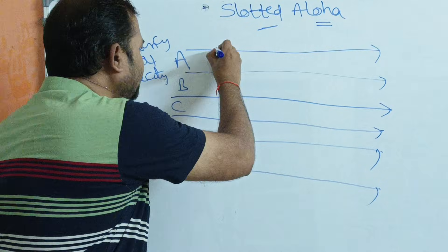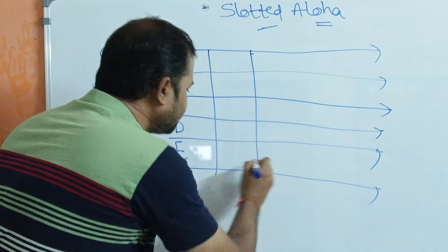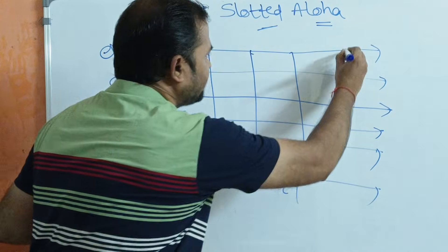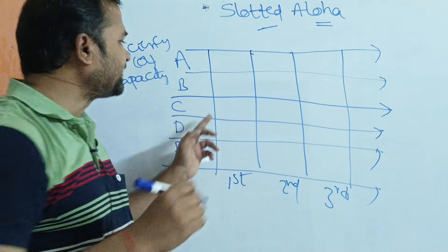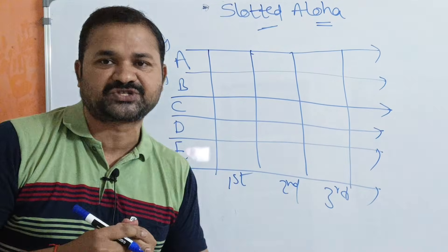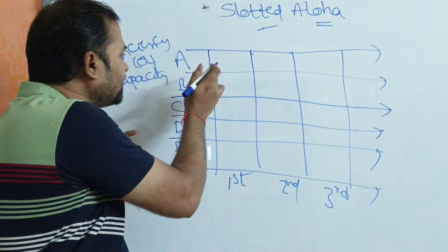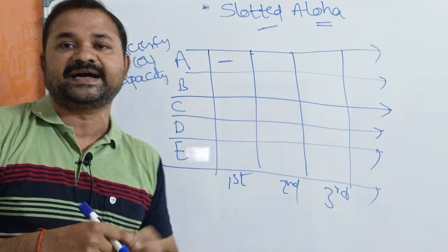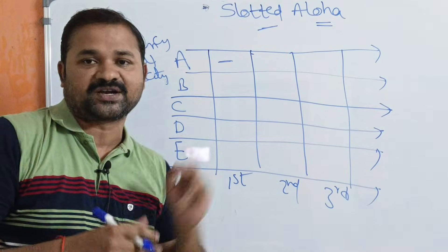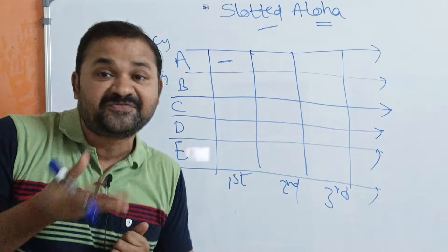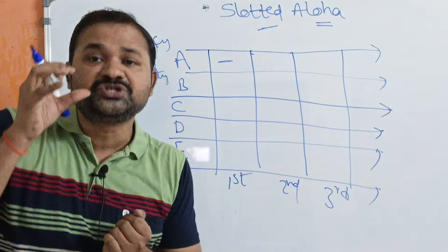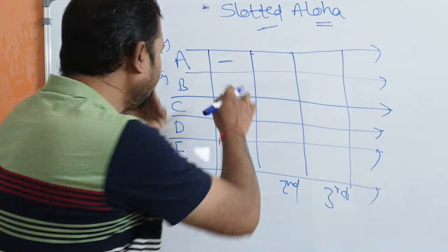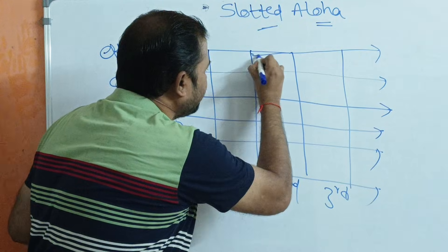Let us see with an example. We have slots: first slot, second slot, third slot — time is divided into various slots. If a user has data available during the middle of a slot, the user cannot send it then. The user must wait for the end of that slot and can only send data at the beginning of the next slot.